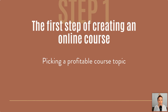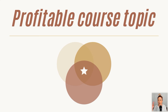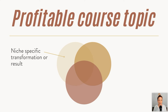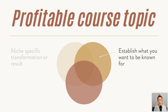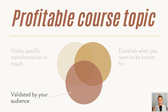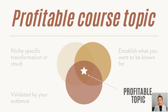The first step of creating an online course is to pick a profitable course topic — keyword being profitable. Before you even start creating content for your course idea, you need to make sure it's going to be profitable, because just because you pick a topic doesn't mean your audience will buy it. There are three things that go into picking a profitable topic: a niche-specific transformation or result, a topic that establishes what you want to be known for, and a topic that's been validated by your audience. Where all three overlap is where you'll find your profitable topic.